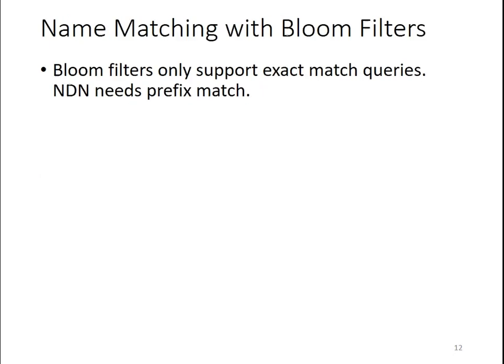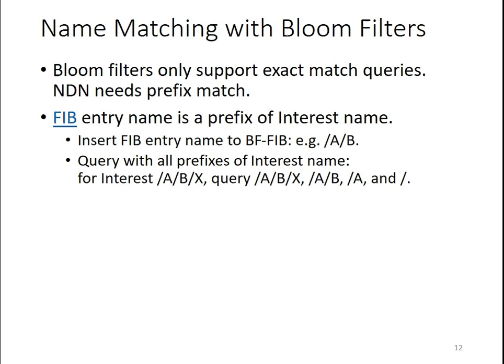We can put all the names from those three tables into the bloom filter, but it's more complicated because bloom filters only support exact match queries, while NDN needs prefix match queries. For the FIB, the entry prefix is the prefix of the interest name. We put the FIB entry name into the bloom filter — for example, FIB entry AB goes into the bloom filter as AB. When interest ABX comes in, we query ABX, AB, A, and slash. AB is a match, so we admit the interest.